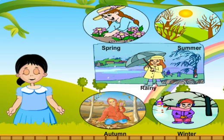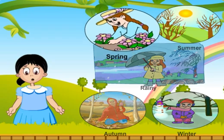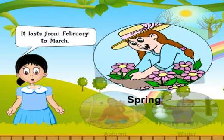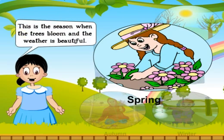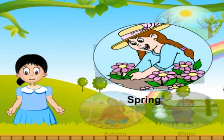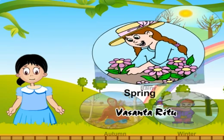I love spring the most. It lasts from February to March. This is the season when the trees bloom and the weather is beautiful. It is called Vasanth Ritu in India.